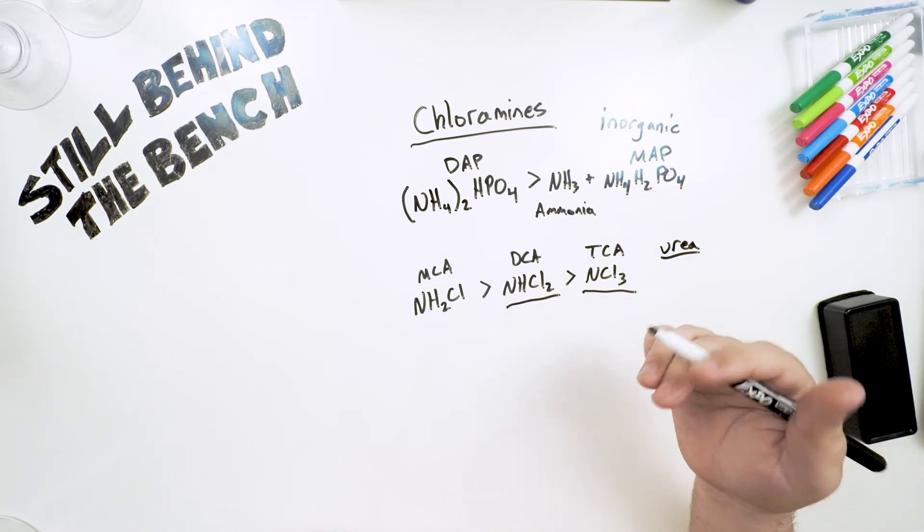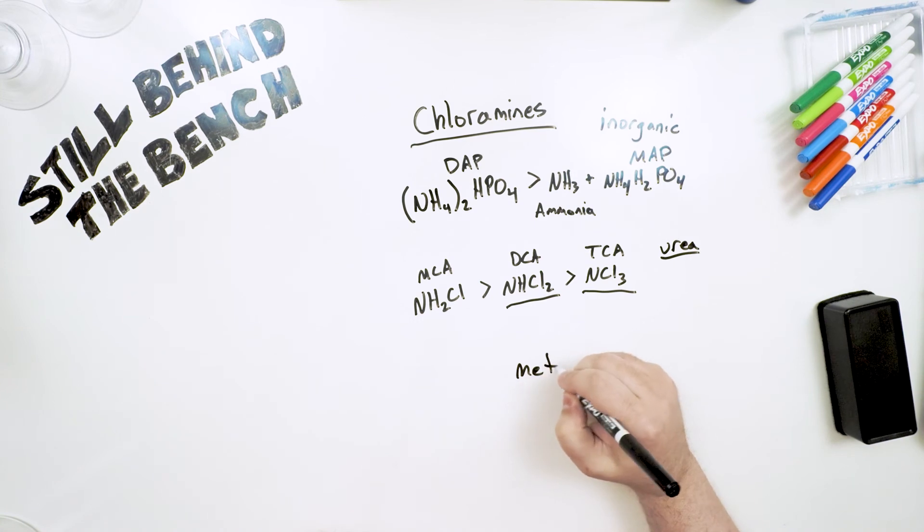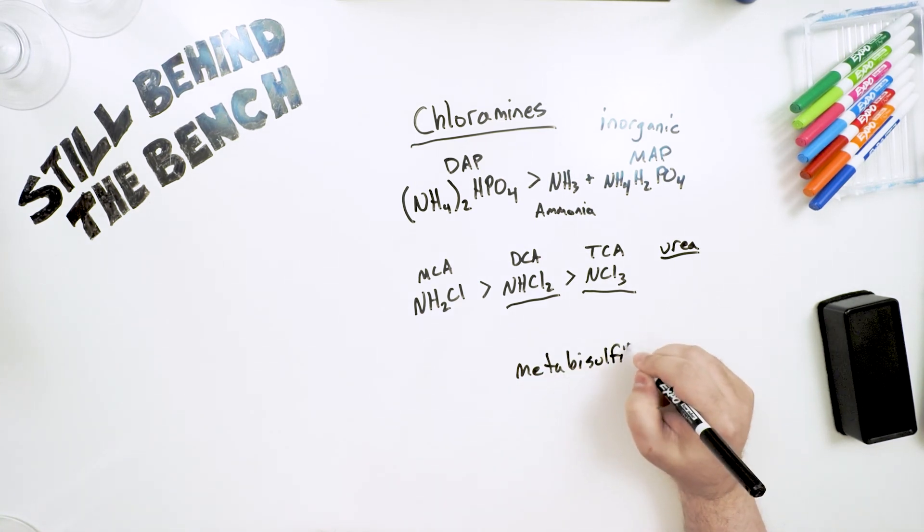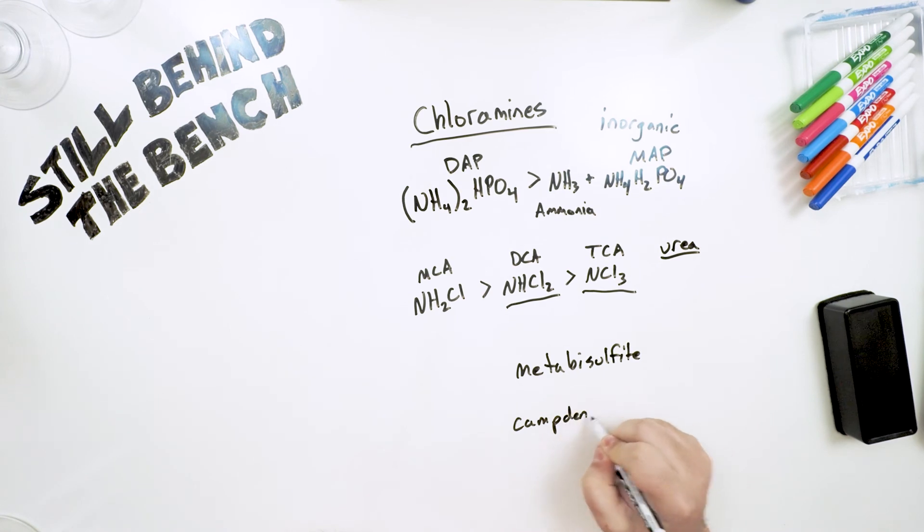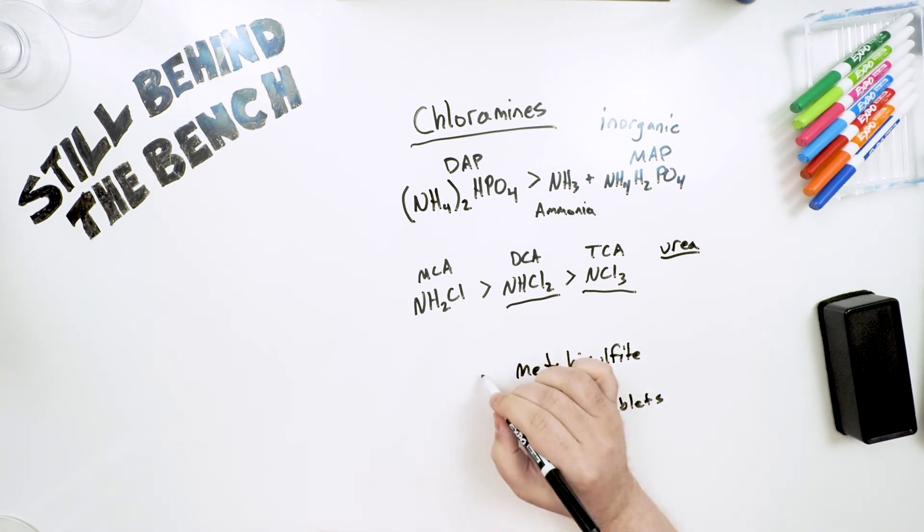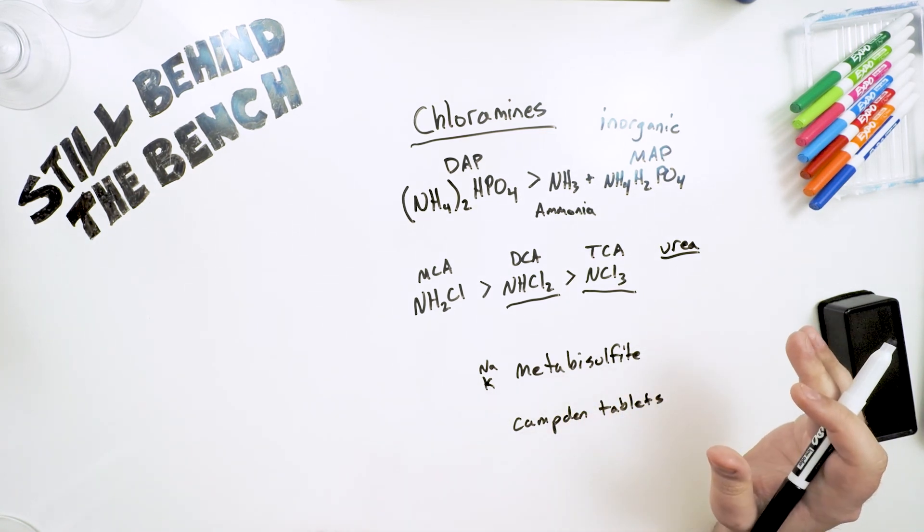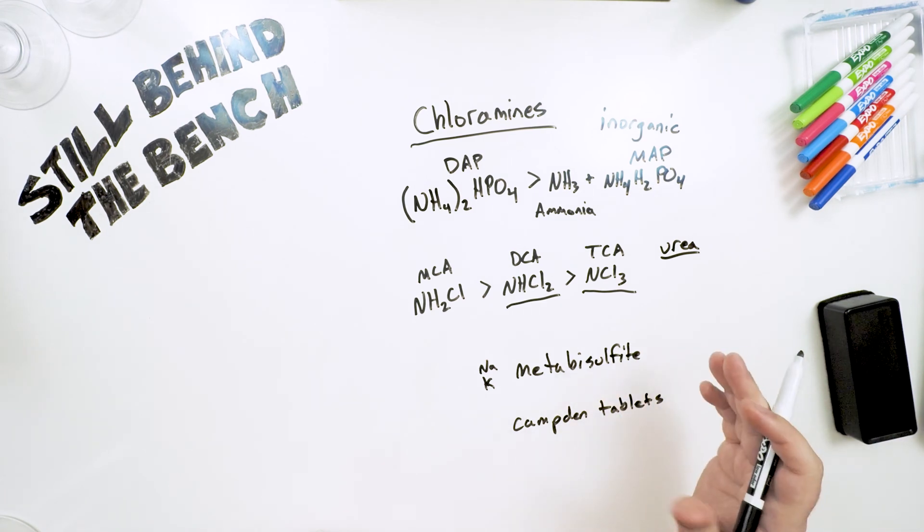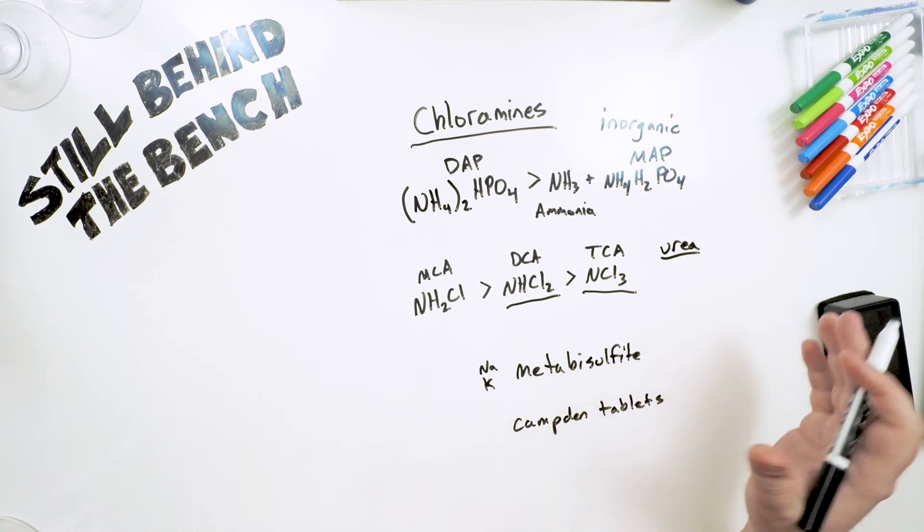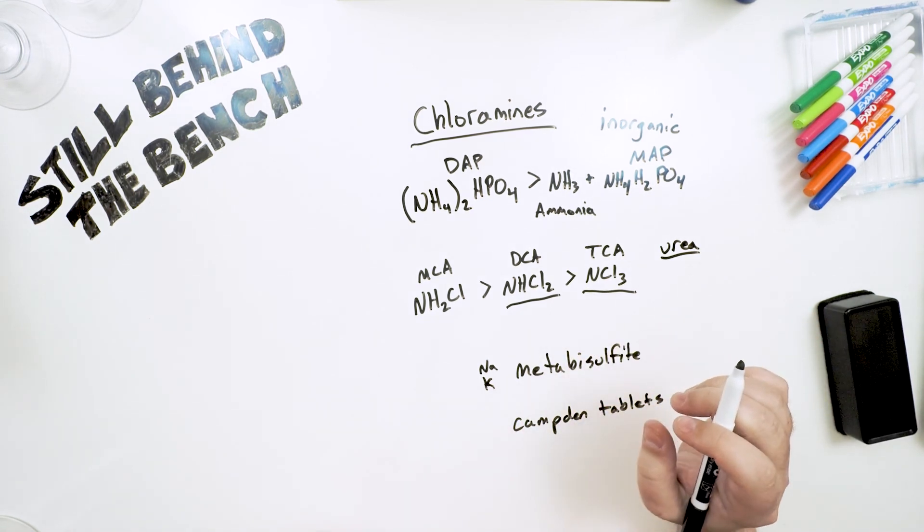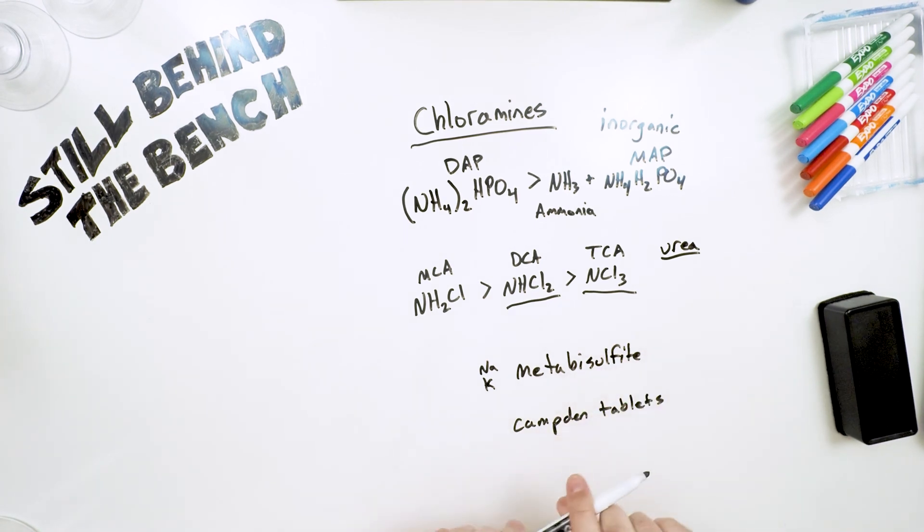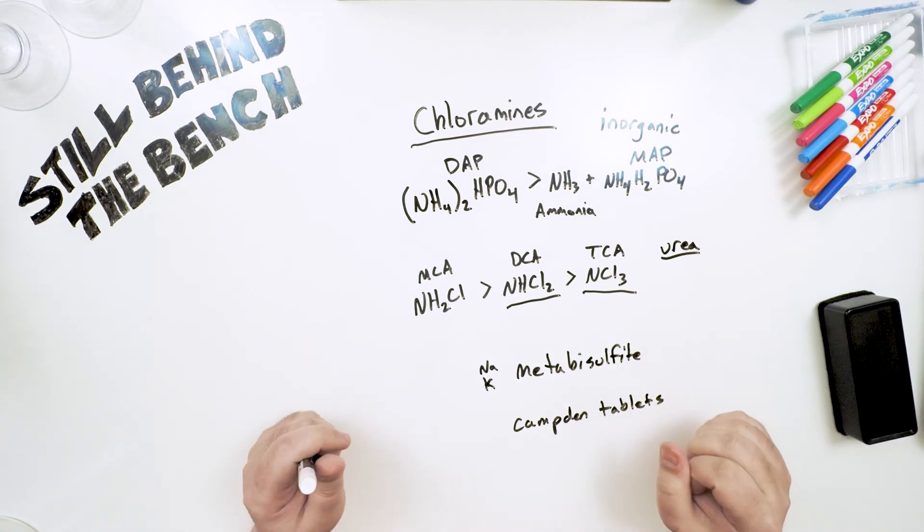You can do that by using a metabisulfite salt. Typically sold as a product called Camden tablets. I got mine at a camping store. It'll either be a sodium or potassium-based metabisulfite. Both of them work fine. They do the same thing. They'll separate into a potassium ion and then the metabisulfite, which is what you want. And it will neutralize any of the chloramines in there. So this is just one example of how chemistry plays a big role in the safety of distilling.